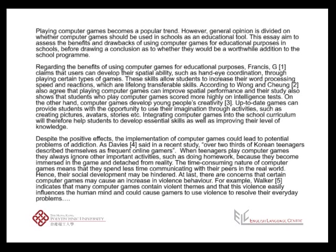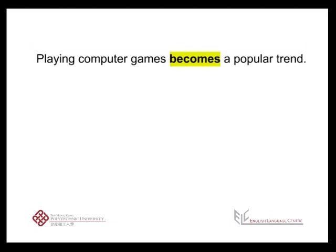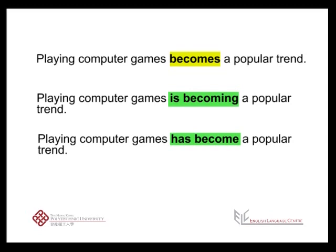Let's look at the first sentence. Can you see the mistake? Find the main verb and consider the tense. Gigi has used the present tense, which we usually use for things that are generally true and don't change. But when giving background information in an introduction, you're often referring to a recent trend. The present continuous or present perfect would be more appropriate here.